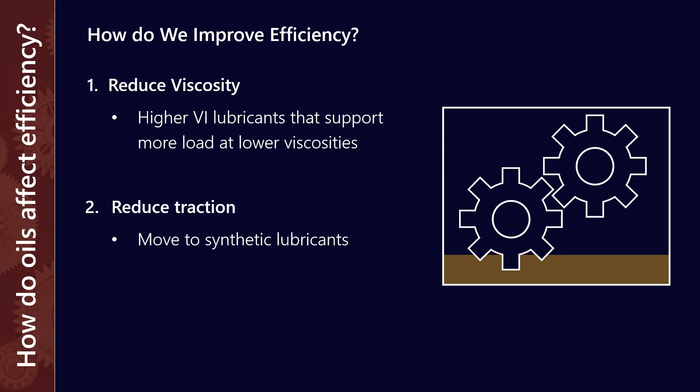Because a lot of the synthetic oils are able to carry more load at lower standard viscosities. The other way that you can do it is to reduce the traction coefficient. And again, this means a move to a synthetic lubricant. It could be a standard PAO, or if it's going to work for you, polyalkylene glycols have extremely low traction coefficients, and that's why they're very commonly used in worm gear applications.